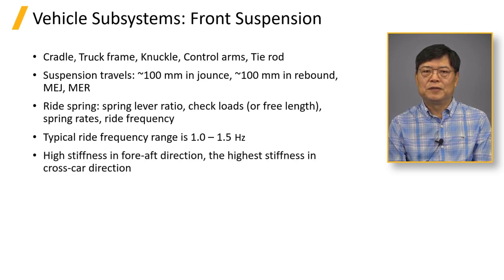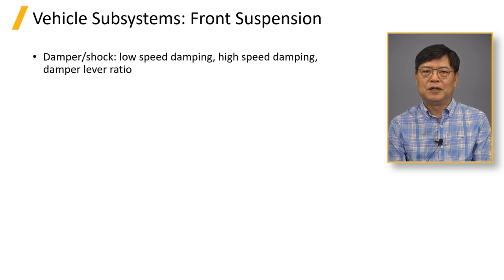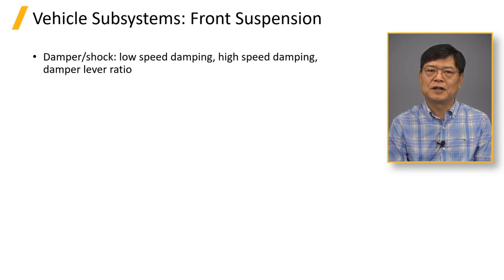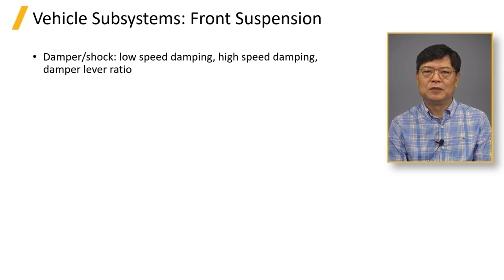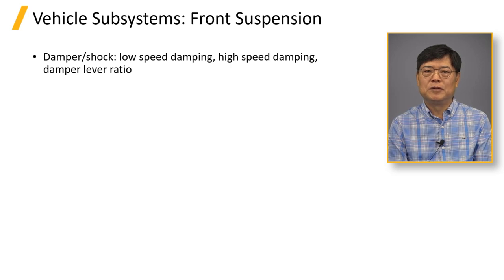The suspension is soft in the vertical direction, stiff in the fore-aft direction, and most stiff in the cross-car direction. The damper attenuates suspension vertical vibration once it happens. The damping force is a function of shock speed, and more attention is paid to low-speed damping for ride control. Ride spring and damper characteristics are often represented by wheel center equivalents.